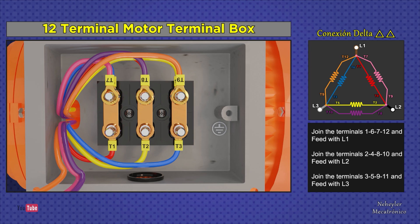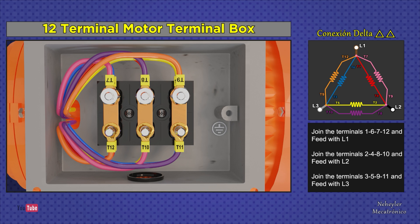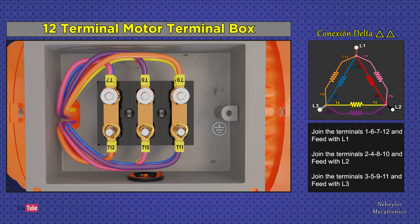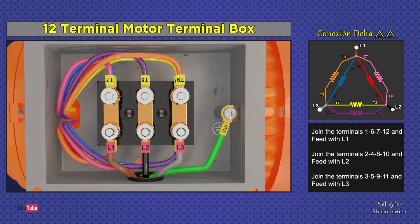On the other side, we also place terminals 12, 10, and 11 in that order. So we have: terminals 1, 6, 7, and 12 connected to power line 1; terminals 2, 4, 8, and 10 connected to power line 2; terminals 3, 5, 9, and 11 connected to power line 3. As always, the ground protection cable must be considered — the green one — which must be connected to the motor casing.